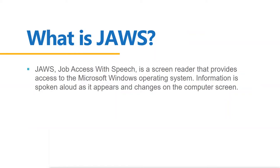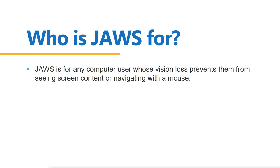What is JAWS? Job Access with Speech — it's a screen reader that provides access to Windows. Information is spoken aloud as it appears and changes on the computer screen. Who is JAWS for? It's for any computer user whose vision loss prevents them from seeing the screen content or navigating with the mouse. We use JAWS if magnification no longer helps, and the user is concentrating just on accessing screen content based on speech feedback.